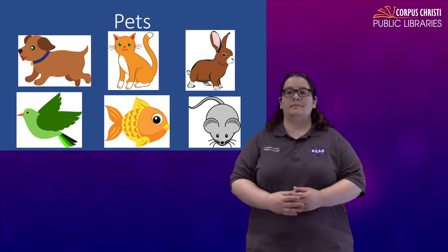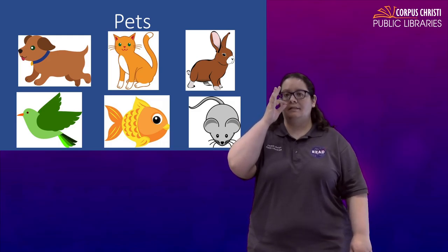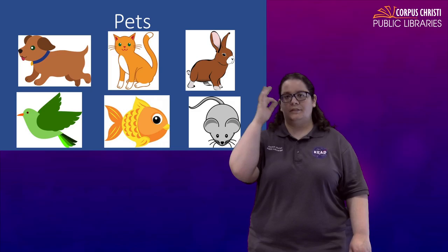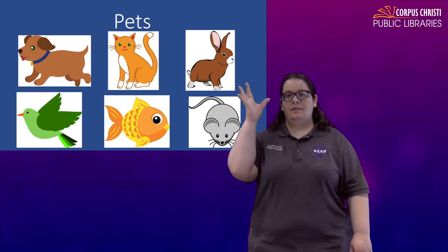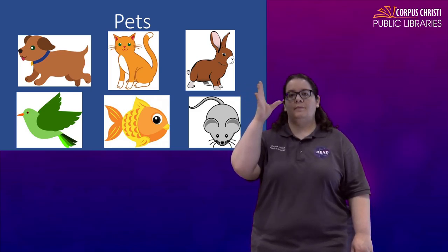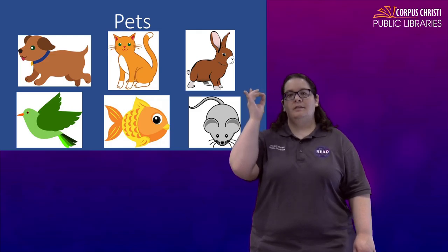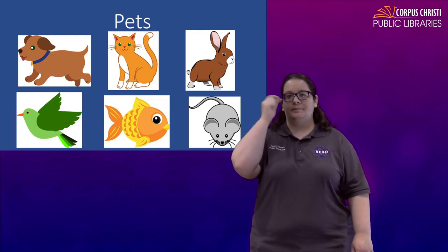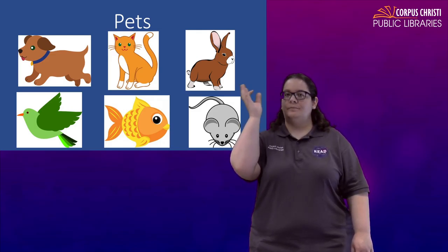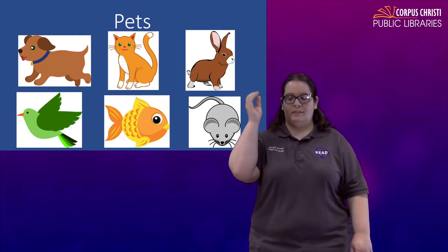For cat you're going to take an F right around your nose and pretend like you are stroking some whiskers. Cat. You can also do this with the number eight or with the letter G. Either way you're talking about a cat no matter which way you do it.